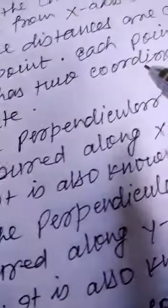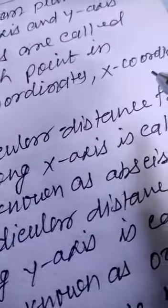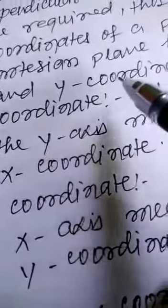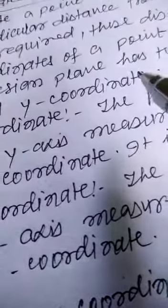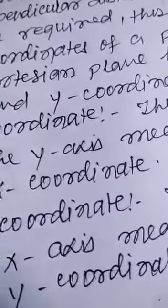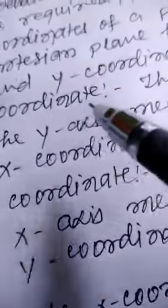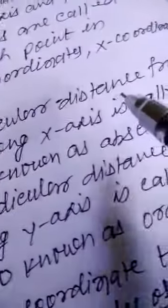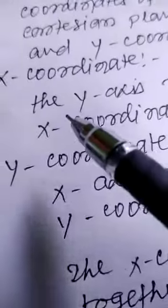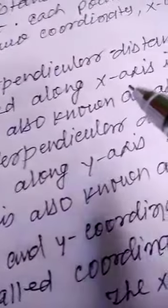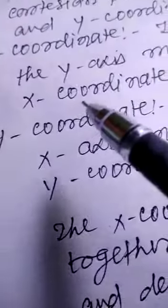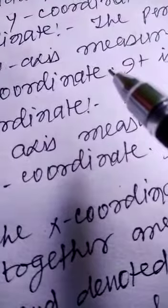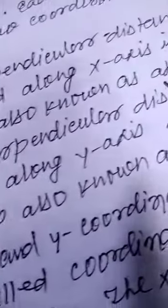Each point in the Cartesian plane has two coordinates: x-coordinate and y-coordinate. The perpendicular distance from the y-axis measured along the x-axis is called the x-coordinate. The distance of a point from the y-axis along the x-axis is called the x-coordinate. It is also known as abscissa.